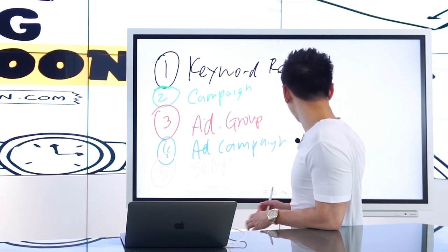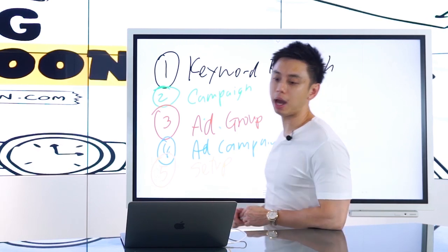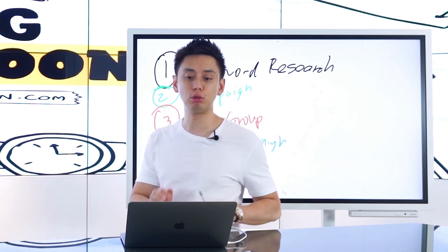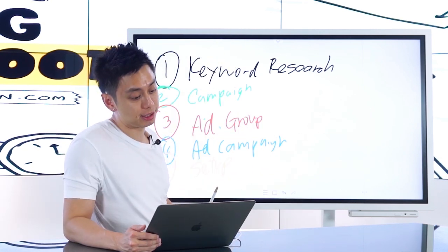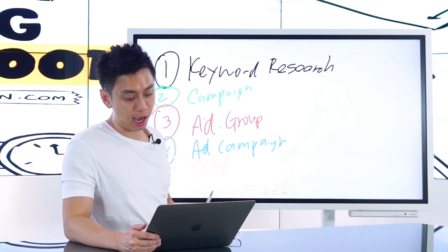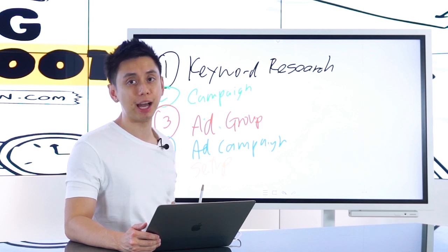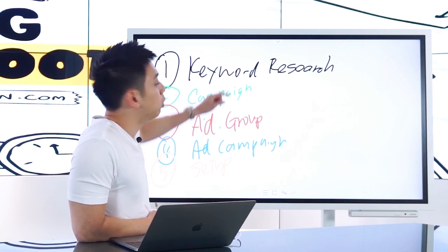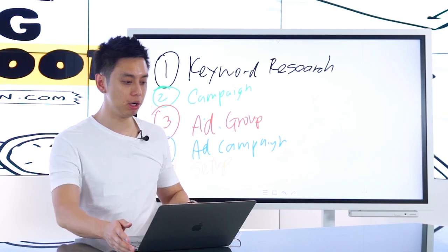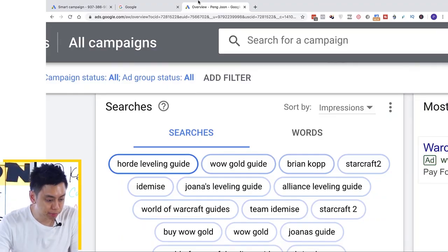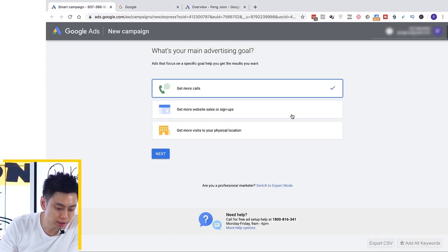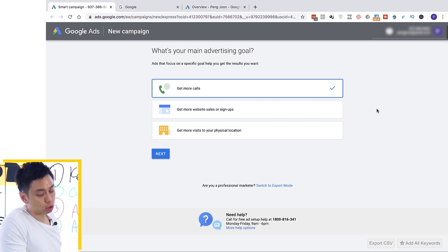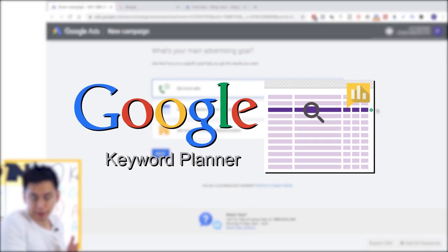When it comes to actually running it, it's going to be a little tactical, but I'm also going to show you actual case studies from the last decade. Let's begin with keyword research. Here's the thing about keyword research: Google has a free tool called the Google Keyword Planner.